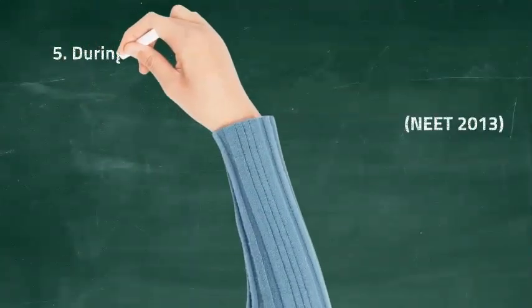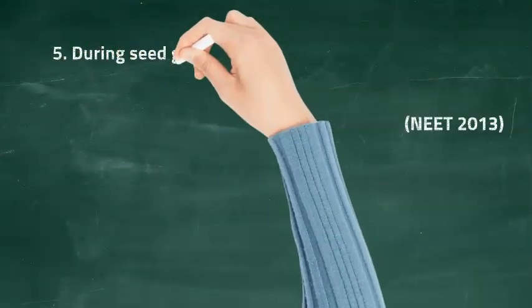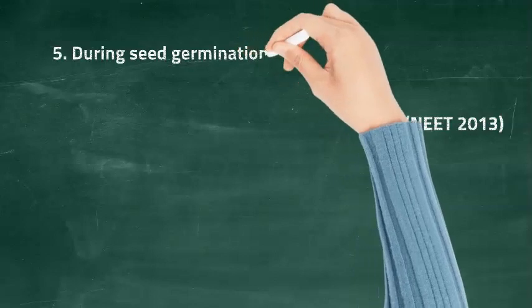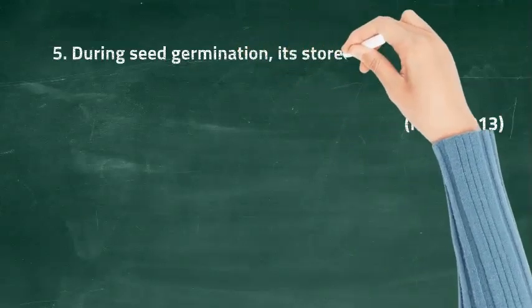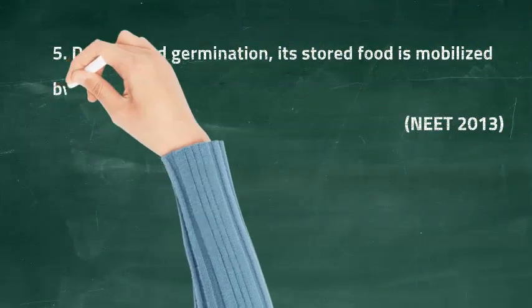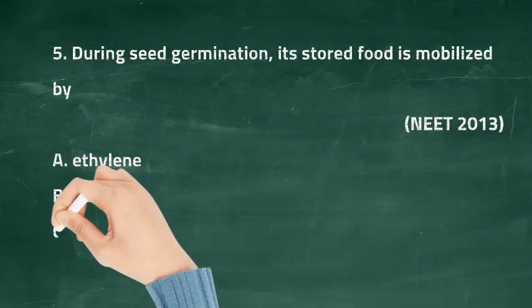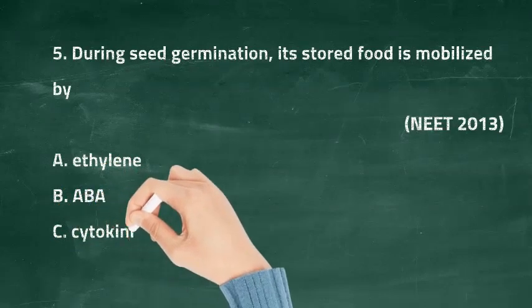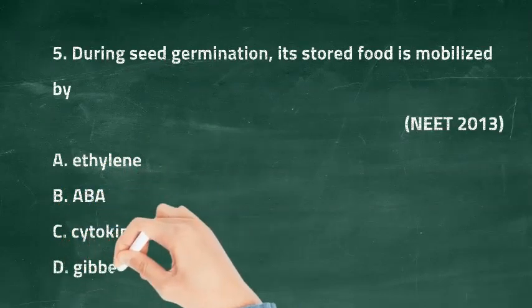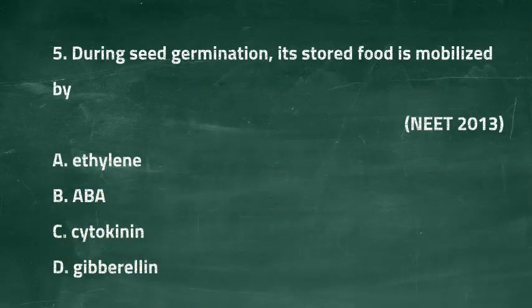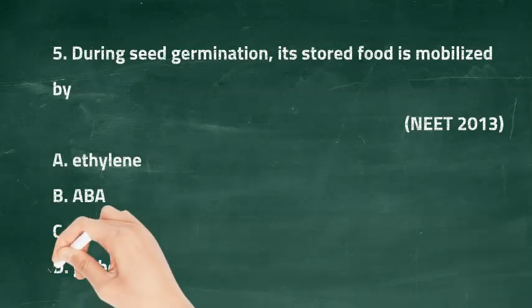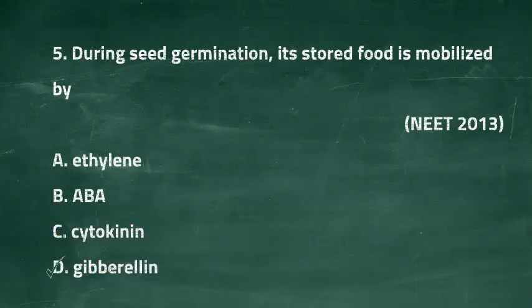The right answer is option D, which is: it made possible the isolation and exact identification of auxins. Question five: during seed germination, its stored food is mobilized by — option A: ethylene, option B: ABA, option C: cytokinin, option D: gibberellin. The right answer is option D, gibberellin.